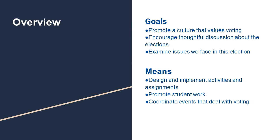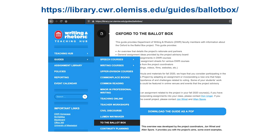The project aims to bring these perspectives together through public events. To locate the DWR guide, you can either navigate through the guides section of the Teaching Hub, or you can enter the URL in your navigation bar. The URL for the guide is library.dwr.olemiss.edu/guides/ballotbox.